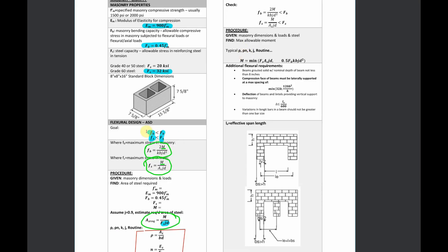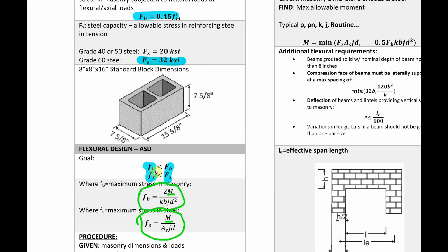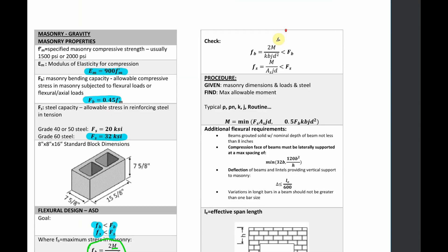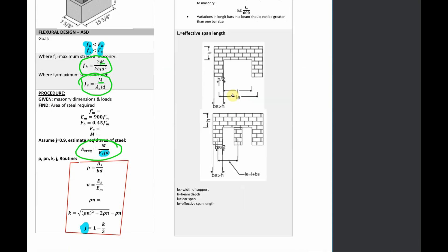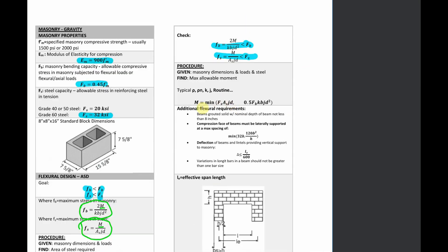Looking at the bigger picture, this is what we were originally trying to solve. Now we have all these numbers and we just check that the demand is less than the capacity — for both masonry bending and the steel capacity. You need to check both of these. I've also made notes on some additional checks you need to do related to reinforcement and finding the effective span length, but I'll leave that for you to go over by yourself.